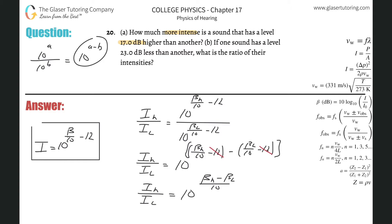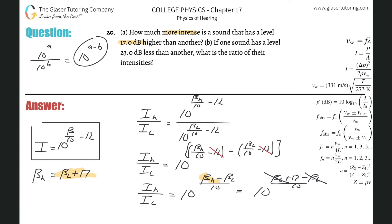We don't know the individual beta values, but we know the relationship between them. We know that the higher decibel value is going to be 17 decibels higher than the lower one, so we simply take the lower decibel value and add 17 to it. Now notice what happens when I substitute this in for the higher beta: we're going to have 10 raised to the lower beta plus 17, minus the lower beta, all over 10. And what happens to these betas? They cancel. So this is 10 raised to the 17 over 10.